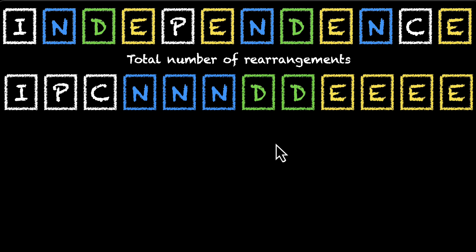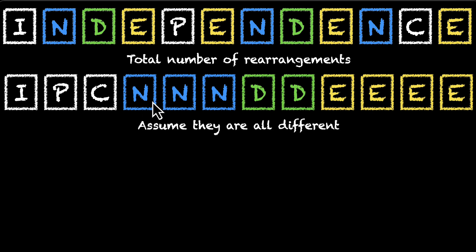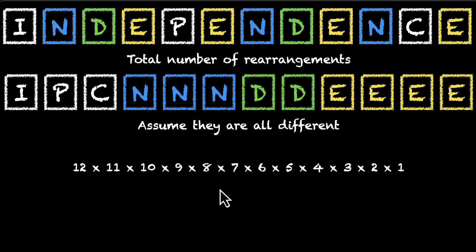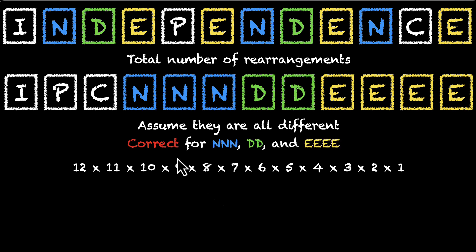How do we arrange these? Because there are repetitions, we need to correct for them. Let's assume all letters are distinct — that gives us 12 letters in total. If all were different, we would have 12! ways. But now we have to correct our mistakes: we correct for three N's by dividing by 3!, for two D's by dividing by 2!, and for four E's by dividing by 4!.